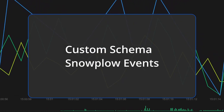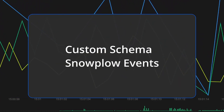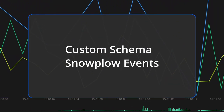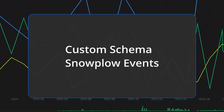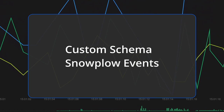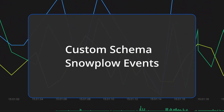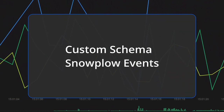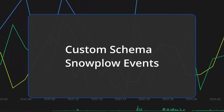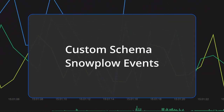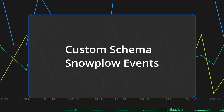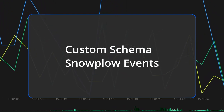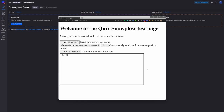To follow along with this tutorial you'll need to have some things set up. It'll be handy to have a custom schema or two set up because I'll be showing you how to extract and transform the data. You'll need events arriving in Snowplow or be able to generate events as needed. I've created a small test page for this.